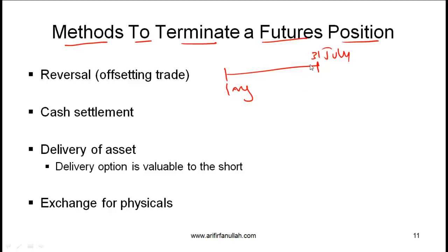A couple of days before expiry you can take an offsetting position by getting into a short position — the opposite of your original long. Depending on the price of the contract, if the price has gone up, the long benefits; if the price has gone down, the long has lost out. A reversal simply means that if you had a long position, you take the opposite position, and for obvious reasons that's called an offsetting trade.